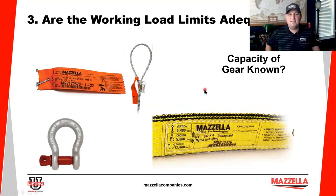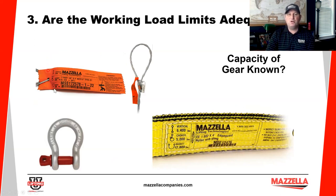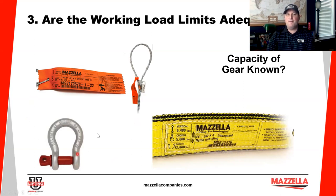Are the working load limits adequate? Is the capacity of the gear known? Here we've got the Mazella seven-part wire rope sling. Whether it's a single-part, seven-part, or nine-part braided sling, the tag must list the vertical, choker, and basket ratings — and you can see those listed here. We also have a web sling with a clear tag listing the vertical, choker, and basket. And there's a brand-new Crosby galvanized shackle with the working load limit embossed on the side.